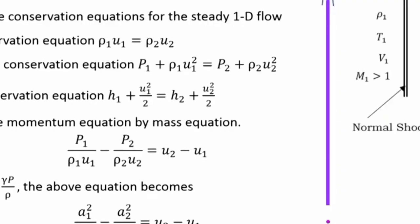We will now apply the conservation equations across the shock. The shock is treated as a discontinuity and is extremely thin — we do not calculate the structure of the shock wave. This is the schematic representation: you have a very thin shock, with upstream conditions before the shock and downstream conditions after. You consider two states — upstream and downstream of the shock. The upstream conditions must be supersonic, that is, Mach number greater than 1.